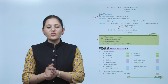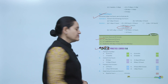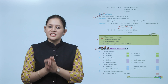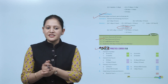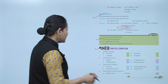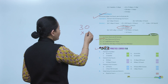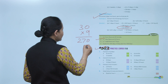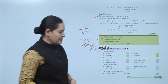Next is Practice Corner 9.6. Convert into days: how many days are in 9 months? Since there are 30 days in one month, 9 × 30 = 270 days. You have to practice all the questions of this exercise.